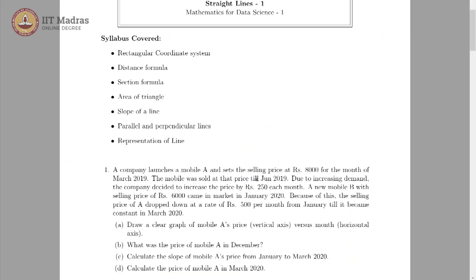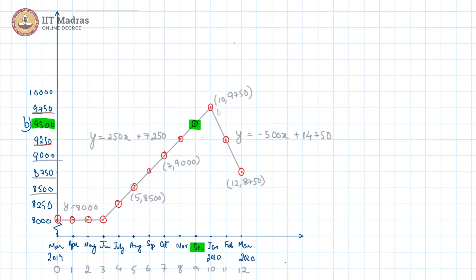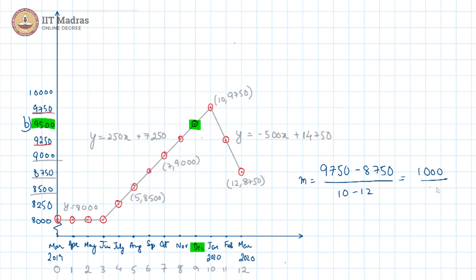For part c, it is asked: calculate the slope of Mobile A's price from January to March 2020. We want the slope of that segment. The slope was already calculated as 9750 minus 8750 divided by 10 minus 12, giving 1000 over minus 2, so the slope m is negative 500. Because of the negative slope, it is a decreasing function — the price had fallen at 500 rupees per month.